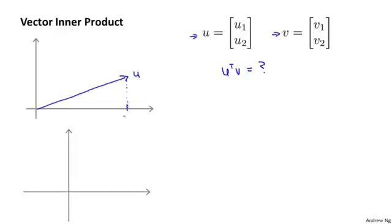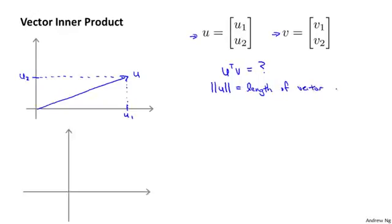What I mean is that on the horizontal axis, that value takes whatever value u1 is, and on the vertical axis, the height is whatever u2 is — the second component of the vector u. One quantity that would be nice to have is the norm of the vector u. These double bars denote the norm or the length of u — the Euclidean length of the vector u. By Pythagoras' theorem, this is equal to the square root of u1 squared plus u2 squared. This is the length of the vector u — a real number.